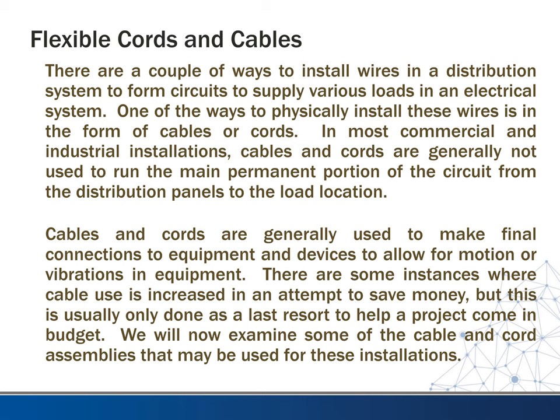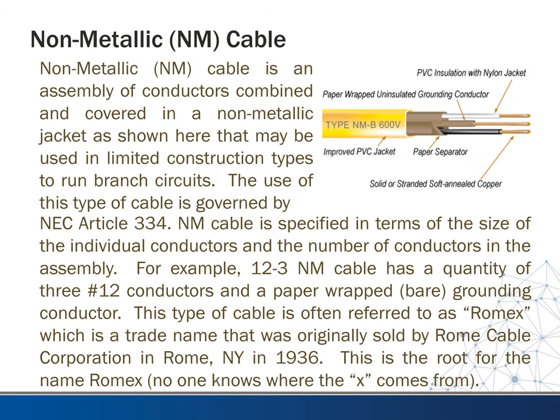Now we want to examine some of the cable and cord assemblies that may be used for these installations. One of the first is non-metallic cable, referred to as NM cable. This cable is an assembly of conductors combined and covered in a non-metallic jacket, as shown in the picture on the right, and may be used in limited construction types to run branch circuits. The use of this type of cable is governed by NEC Article 334.